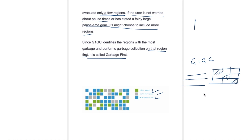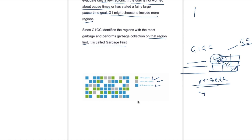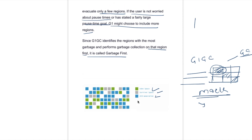If the user is interested in minimal pause time, G1 GC can choose to evacuate only a few regions. If the user is not worried about pause times, GC might choose more regions. Since G1 GC identifies regions with the most garbage, it performs garbage collection on those regions first — that's why it is called Garbage First. Multiple threads divide the heap memory into multiple similar blocks, simultaneously mark and sweep that memory space, identify which area has the most garbage, and apply GC there first.